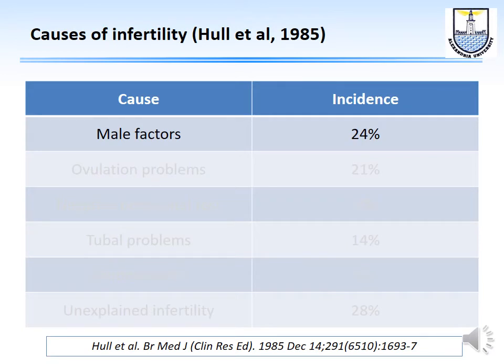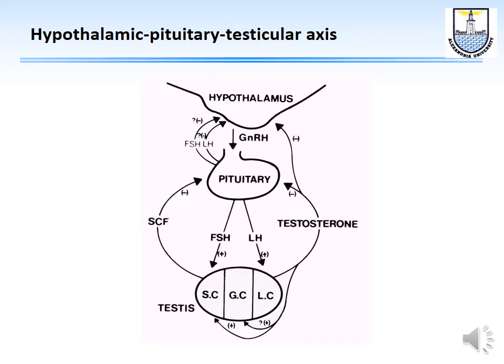Now let's start with the male factors in infertility. This is the hypothalamic-pituitary-testicular axis. The hypothalamus produces GnRH, which stimulates the pituitary to secrete FSH and LH. These work on the testes to stimulate testosterone production, which in turn has a negative feedback mechanism on both the pituitary and hypothalamus — similar to what happens in the female.